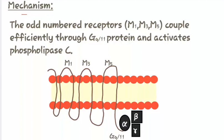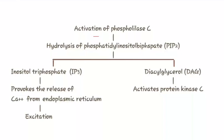Now let us study the mechanism of odd numbered muscarinic receptors. The odd numbered muscarinic receptors (M1, M3, and M5) couple efficiently through GQ by 11 protein and activate phospholipase C. The activation of phospholipase C causes hydrolysis of phosphatidyl inositol biphosphate (PIP2), which causes the formation of inositol triphosphate (IP3) and diacylglycerol (DAG).